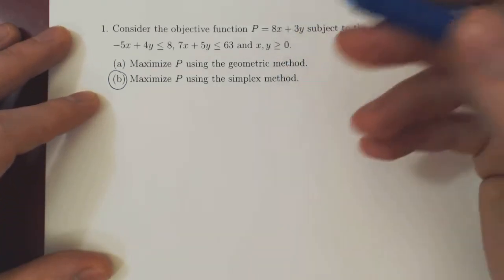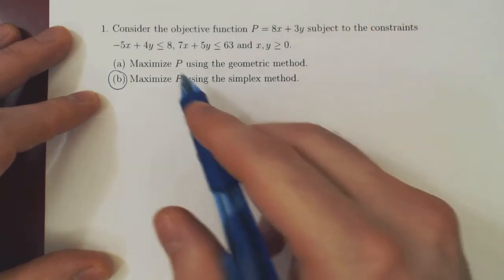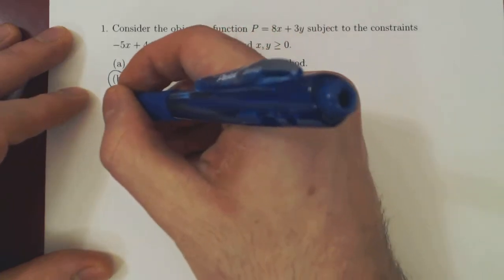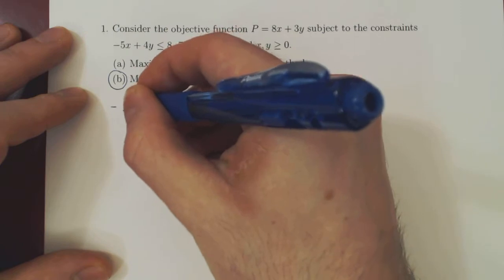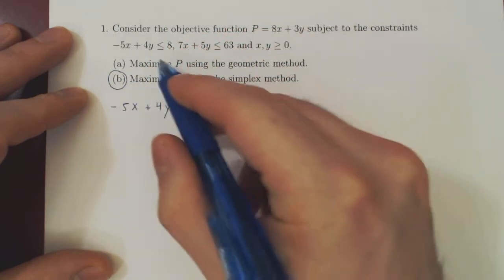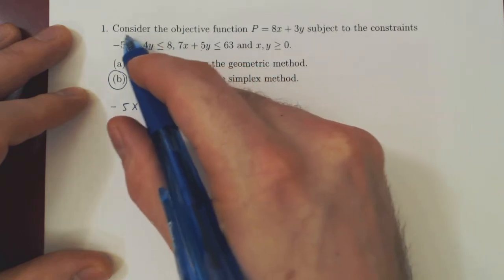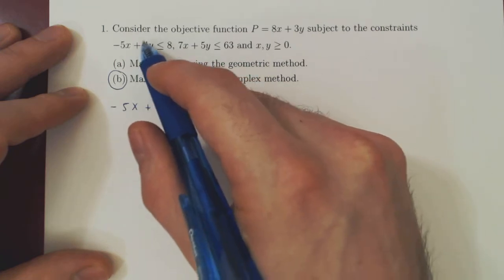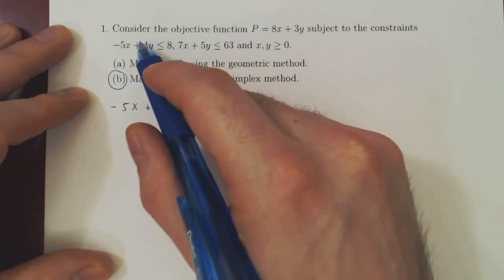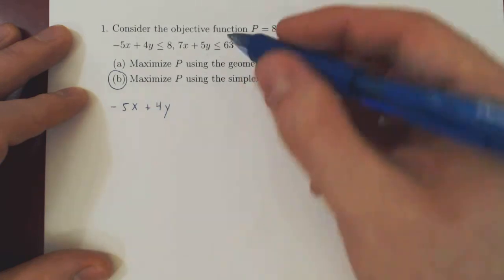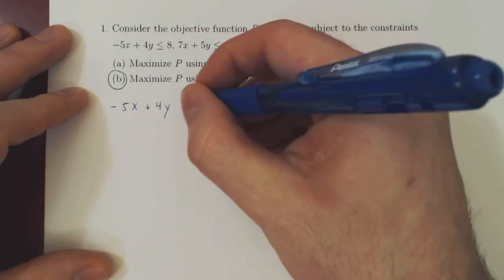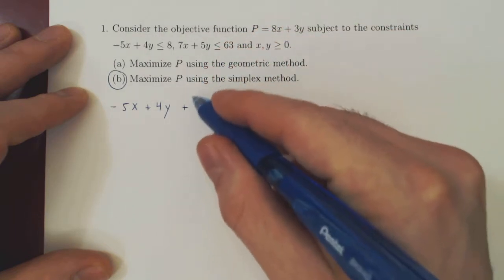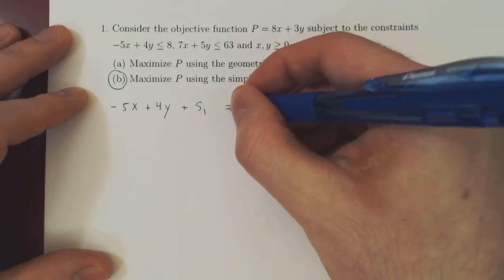Let's go through the steps. The first step is to transform these inequalities into equalities. If you think of it, you have negative 5x plus 4y is at most 8. There's a little bit missing here so that this quantity is equal to 8. As this value is smaller or equal to 8, if we add just the right amount, we'll have it equal 8. So we'll need here another variable and we'll call it S1.